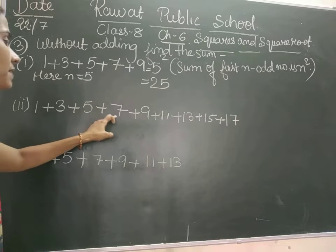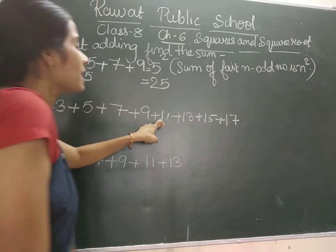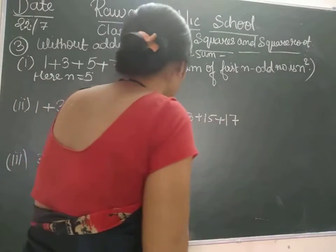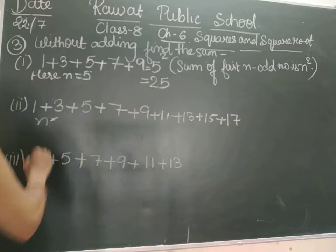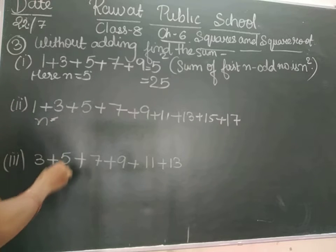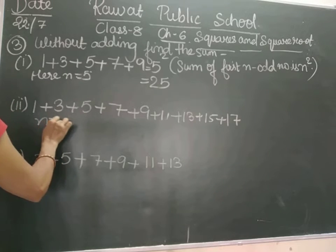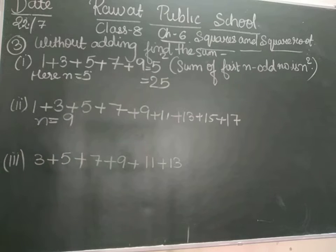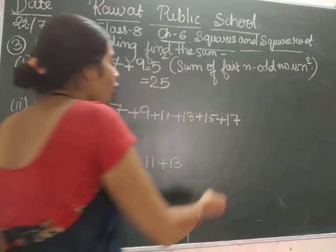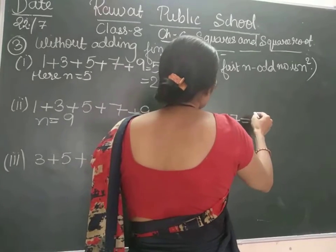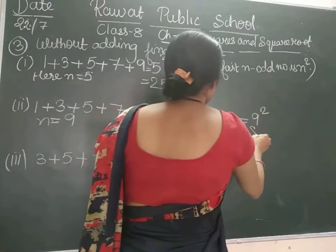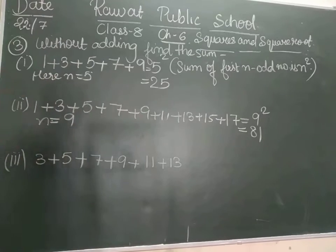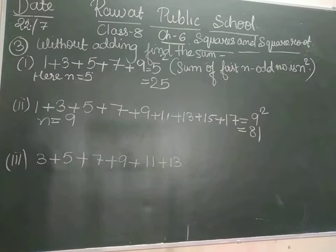For the next series 1 + 3 + 5 + 7 + 9 + 11 + 13 + 15 + 17, how many numbers are there? n is 9. So what will be the sum? It will be 9² which is 81.